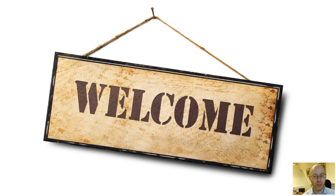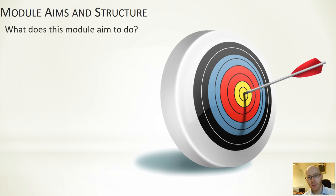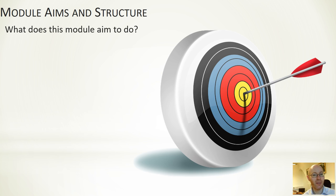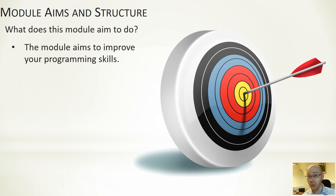There'll be a second introductory talk and this will talk more about the structure of the project and how it will be assessed. For this one, we'll start off by really defining what the module aims to accomplish. What are the learning outcomes? For this module there is only really one significant learning outcome — a simple one. The module aims to improve your programming skills. That's the heart of the module, that's what it's about, that's what it wants to accomplish.